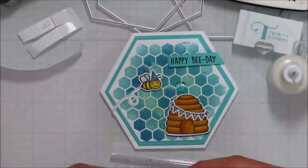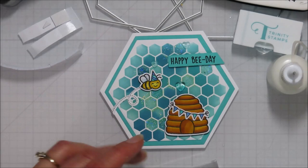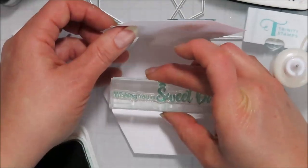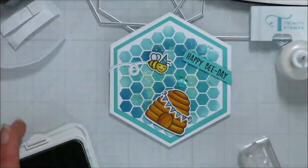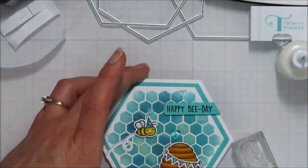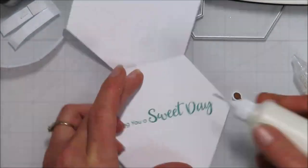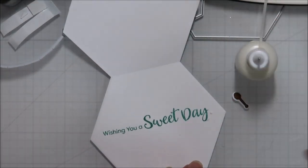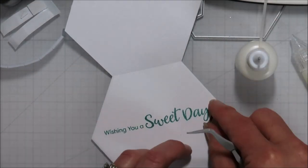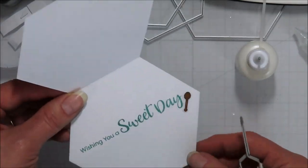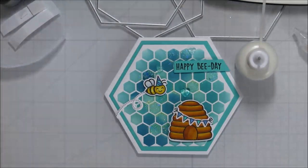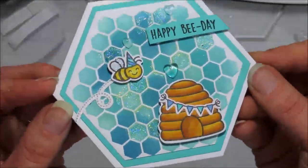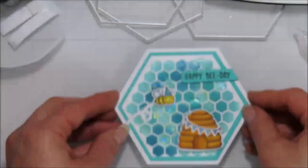So I did pull in some MFT stamps here for my inside sentiment. I love the font. Font matters, right? So the font on these with the straight type and then the swirly, scrolly type, it's just, it is one of my favorite sweet sentiment sets. I will have that listed down below because I do not recall the name on the top of my head. And then I just added that honey dipper on the inside to pull in the bee theme from the outside of the card. And that is my finished card.